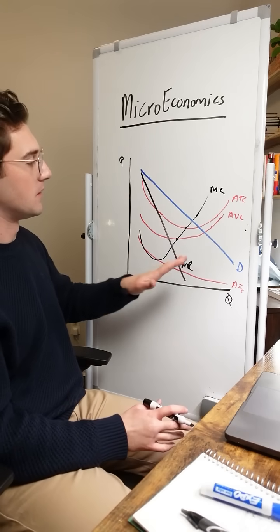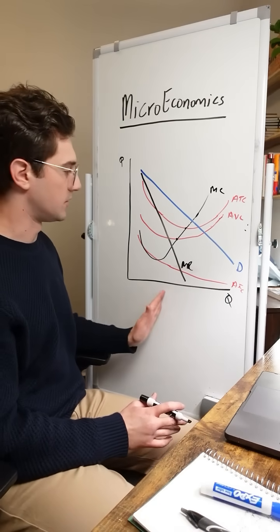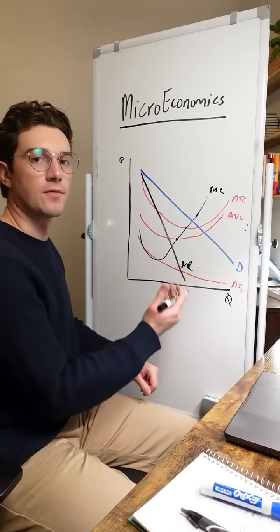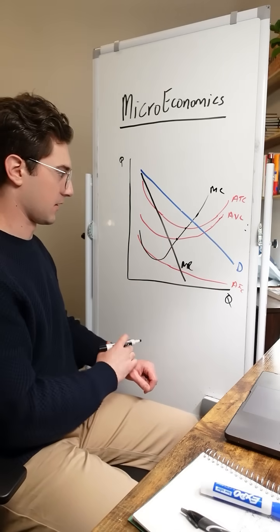I'm not going to break that down in this video. But when you do the math for each additional unit sold and derive the price off of the demand curve, the additional revenue from each unit is essentially just two times the slope of the demand curve.